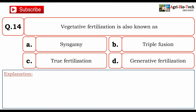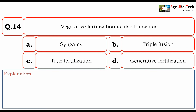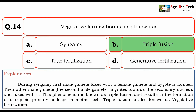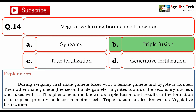Next question: vegetative fertilization is also known as — syngamy, triple fusion, true fertilization, or generative fertilization? The correct answer is B: triple fusion. During syngamy, the first male gamete fuses with the female gamete to form a zygote. The second male gamete migrates towards the secondary nucleus and fuses with it; this is called triple fusion, resulting in the formation of a triploid primary endosperm mother cell. Triple fusion is also known as vegetative fertilization.